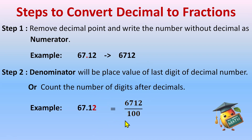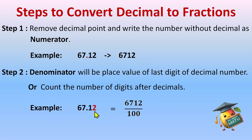You can also write this as a mixed fraction. Before the decimal we have the whole part; after the decimal we have the decimal part. So 67 is the whole number and 12 is the numerator, with denominator 100 — either by counting the digits after the decimal or by writing the place value of the last digit.